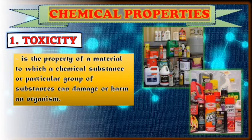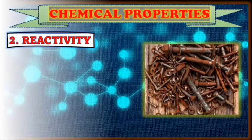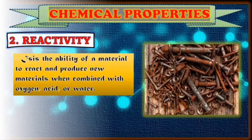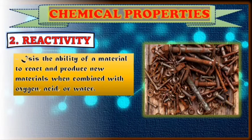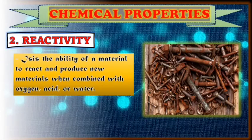Next chemical property is what you call reactivity. It's the ability of a material to react and produce new materials when combined with oxygen, acid, or water. Just like metals — when they react with oxygen, air, and moisture, the tendency of the metal is to rust. That is what you call reactivity.